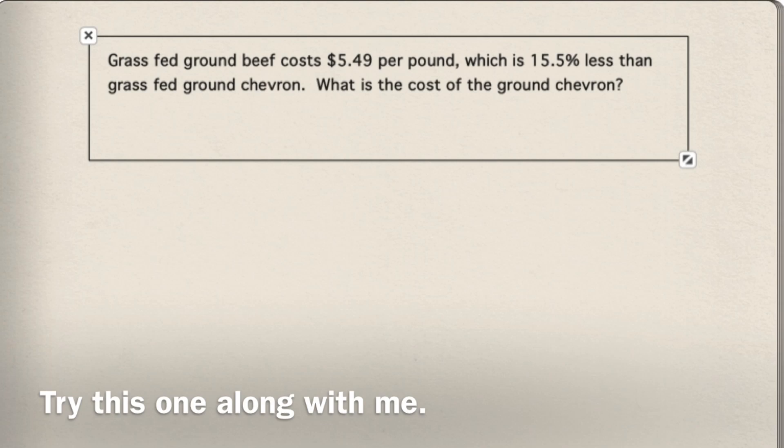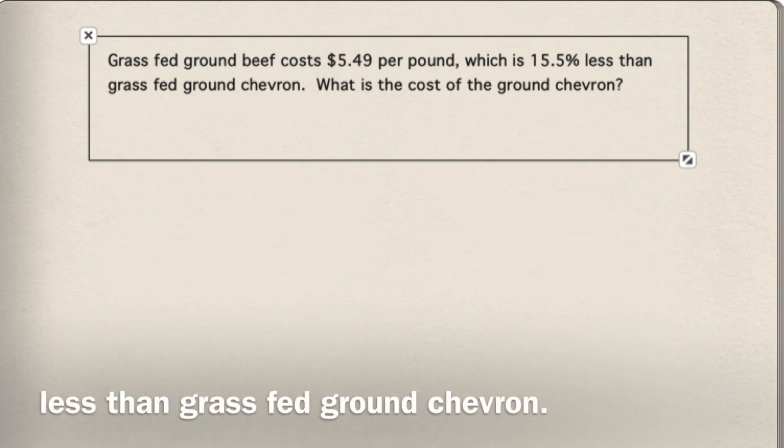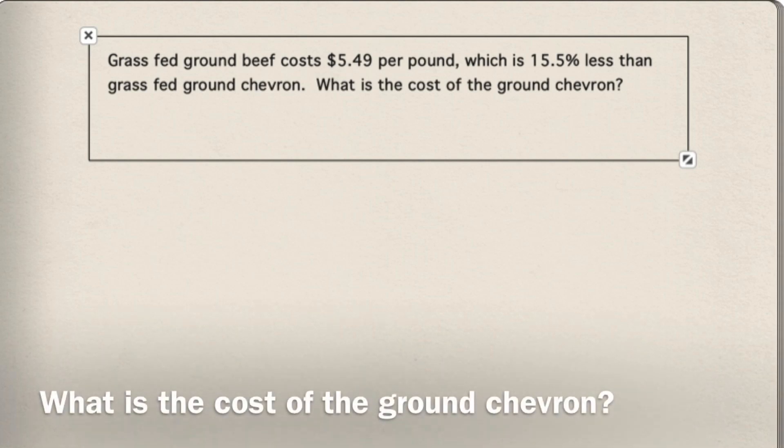Try this one along with me. Grass-fed beef costs $5.49 a pound, which is 15.5% less than grass-fed ground chevron. What is the cost of the ground chevron?